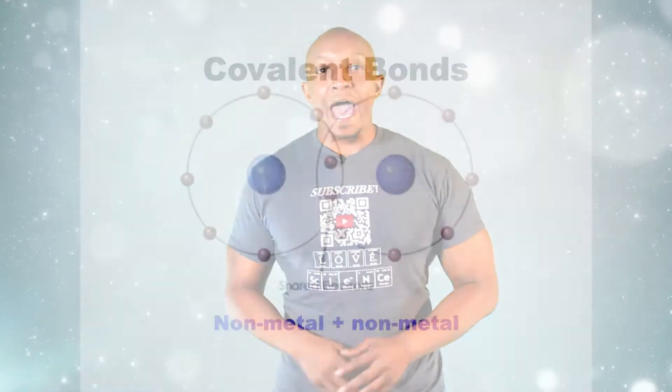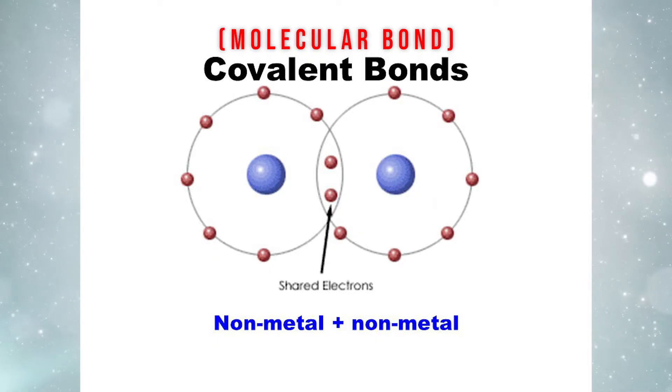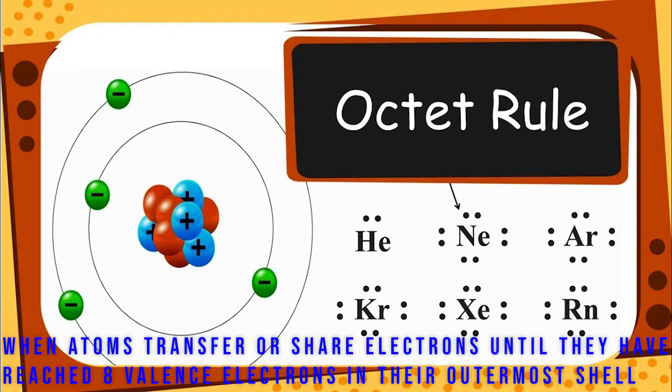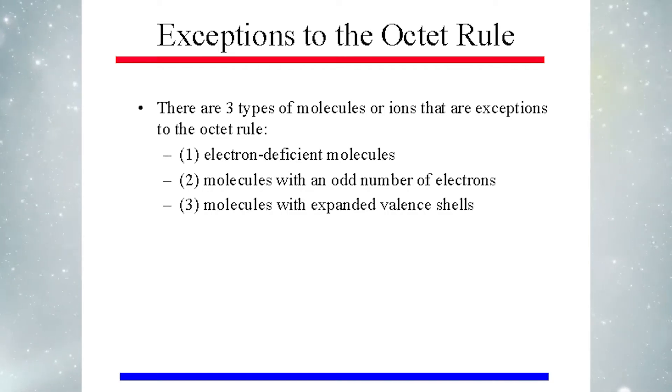Let's start off with a brief overview of covalent chemical bonds. A covalent bond, also called a molecular bond, is a chemical bond that involves the sharing of electron pairs between two or more non-metals. The elements in a covalent bond share electrons in order to satisfy the octet rule. The octet rule is basically when atoms transfer or share electrons until they have reached eight valence electrons in their outermost electron shell. Now there are exceptions to the octet rule, but we will keep it nice and simple in this video to help you get the central information you need in order to predict and write covalent chemical formulas and compounds.